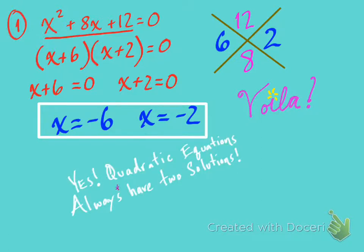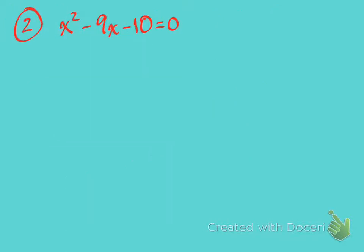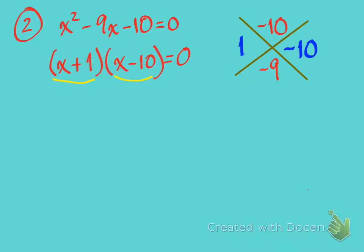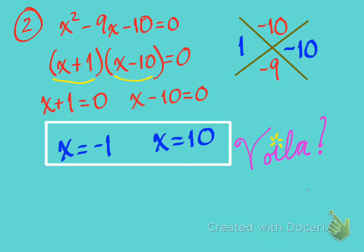Here's another one. Set your numbers up in the diamond and figure out what numbers go on the sides. This one's a little trickier — the numbers are 1 and negative 10. Factor and write those factors out, set them equal to zero, and solve. There are your solutions. Solving a quadratic when you have to factor it is not that much more difficult.